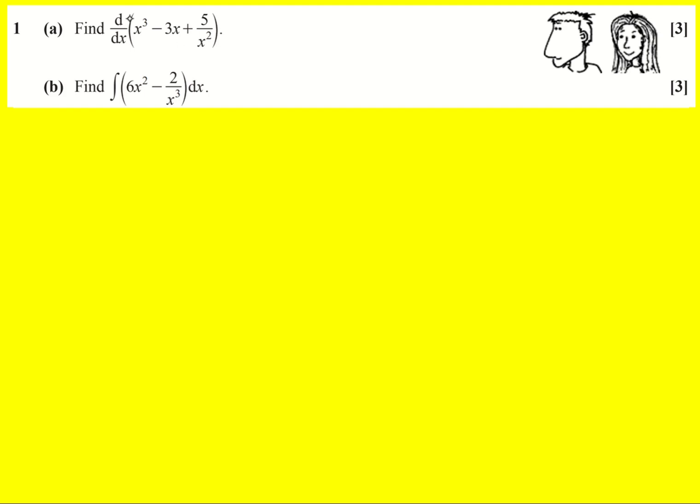First up, we're being asked to differentiate—that's what d by dx means. Let's recall the rule for polynomials: if you differentiate k times x to the n, where k is a constant, then you get k n x to the n minus one. Essentially, we bring the power down and subtract one from the power.